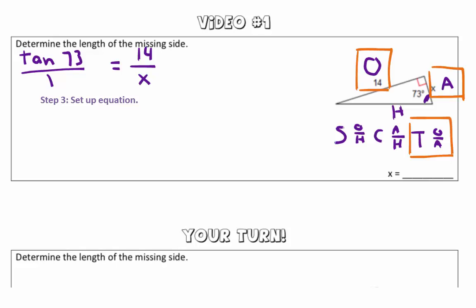So, in order to solve this, we need to first figure out what is tangent of 73. So we're going to go ahead and plug that into our calculators. And when we plug that in, making sure that you're in degree mode, you should get that the tangent of 73 is approximately 3.2709.